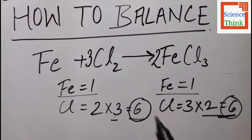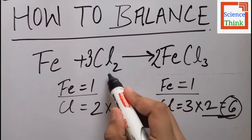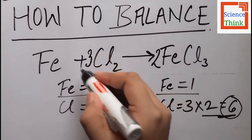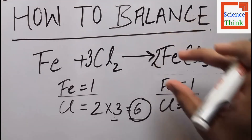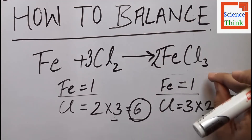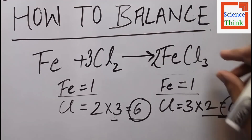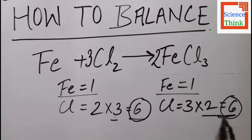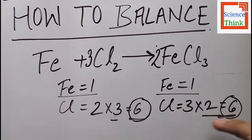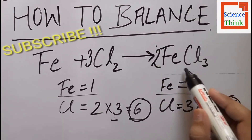I'll put three in front of Cl2 and two in front of FeCl3, because you cannot change the subscripts — you can only add coefficients in front of the elements. So I have not changed the three in FeCl3; I've only added two as a coefficient in front of FeCl3.